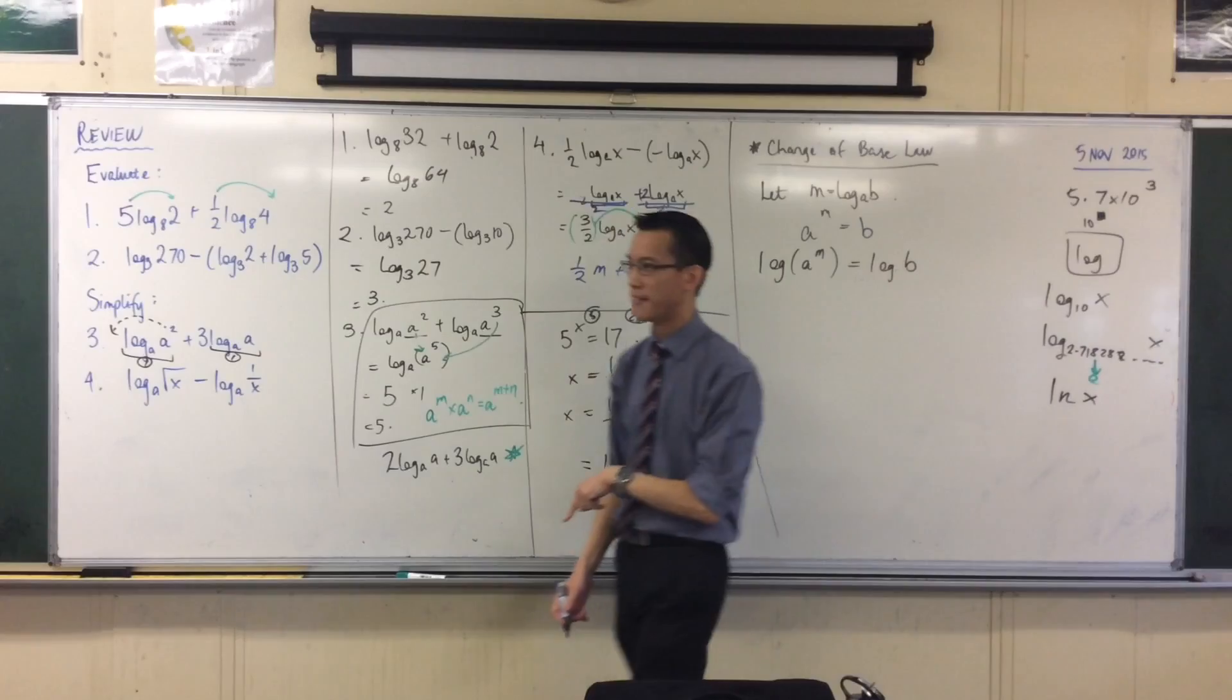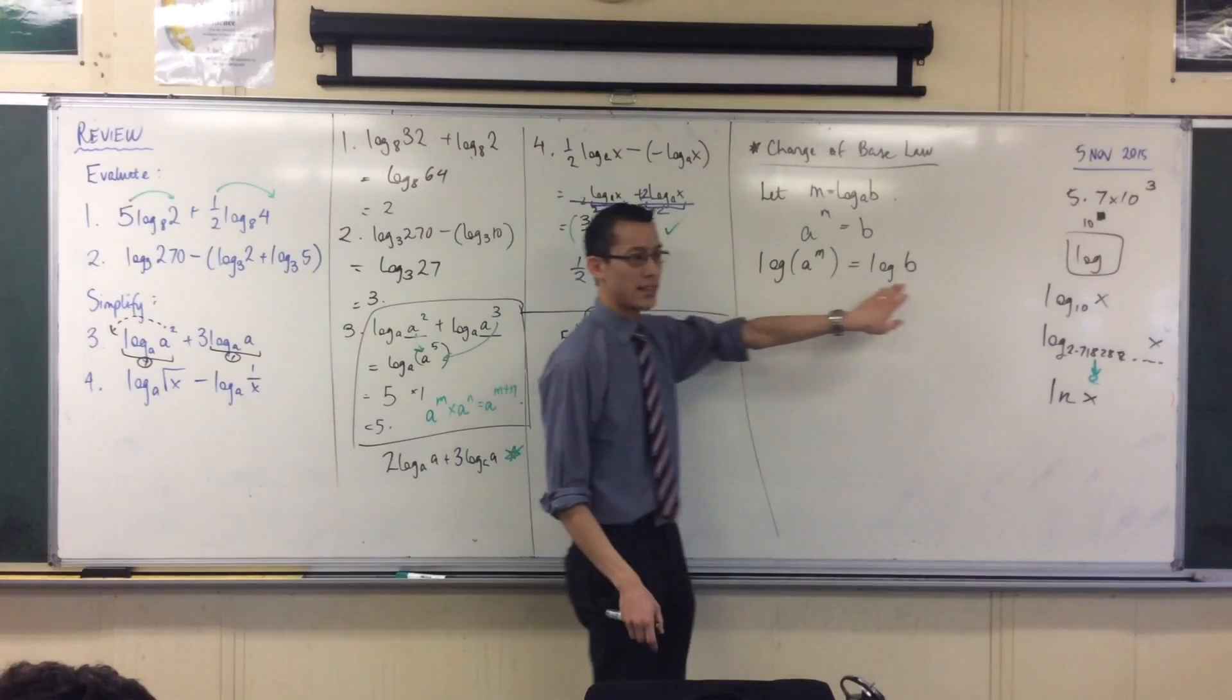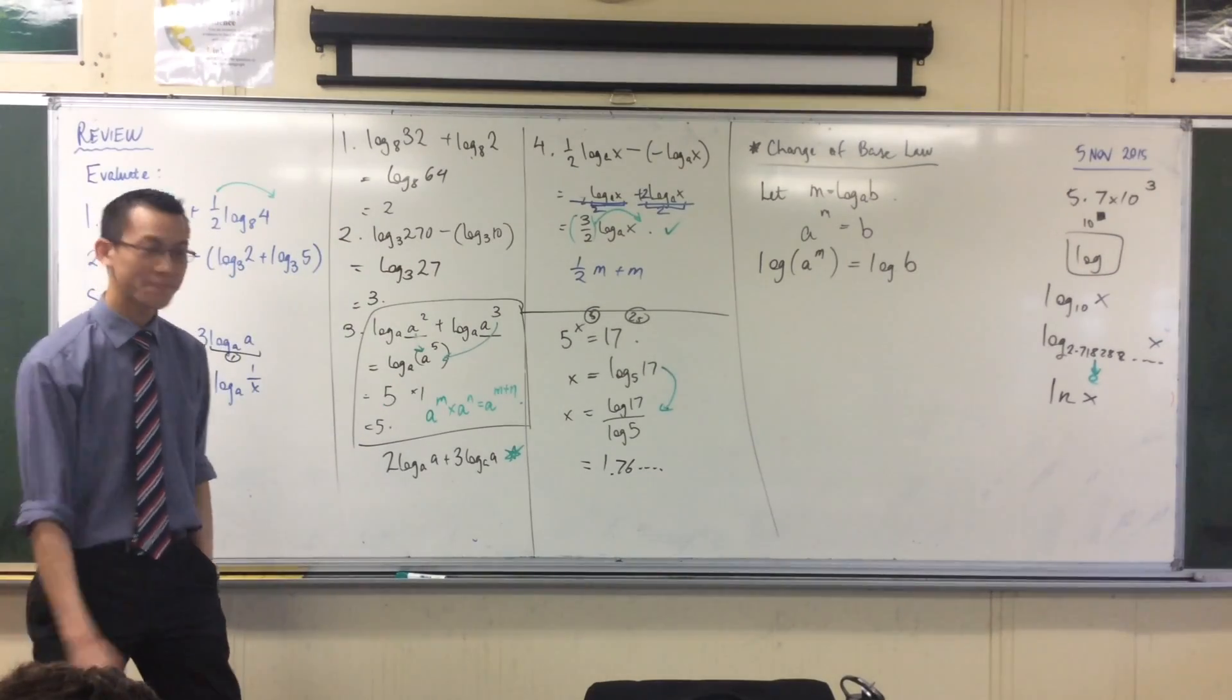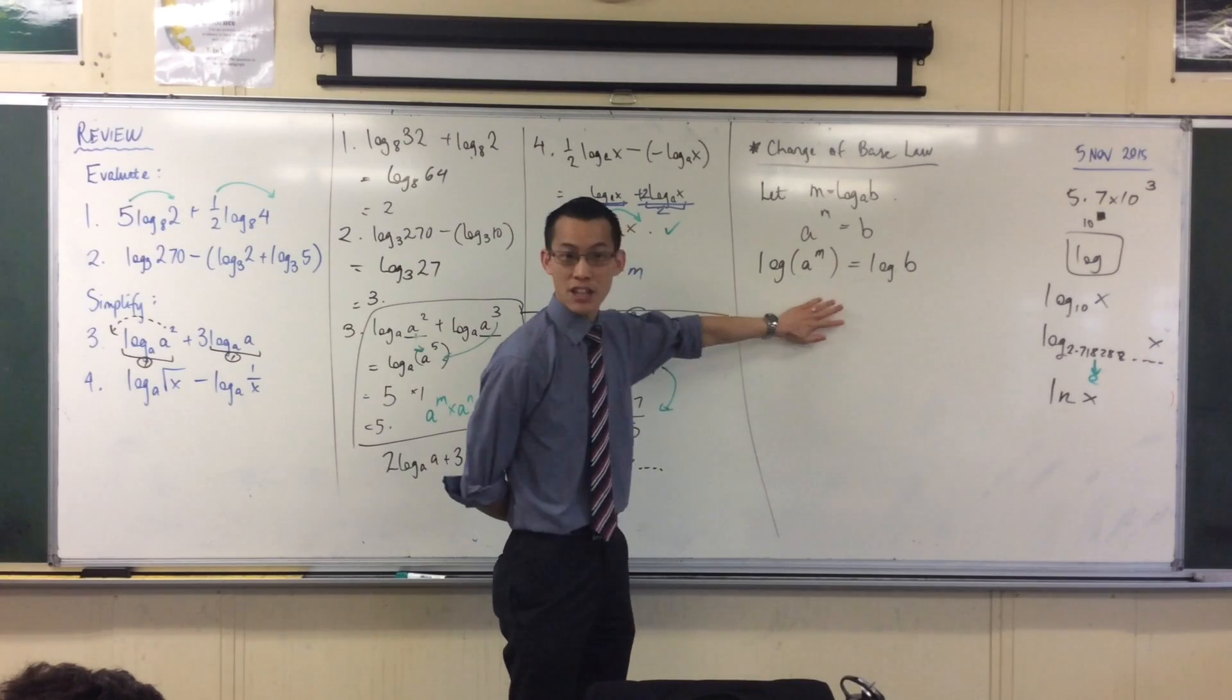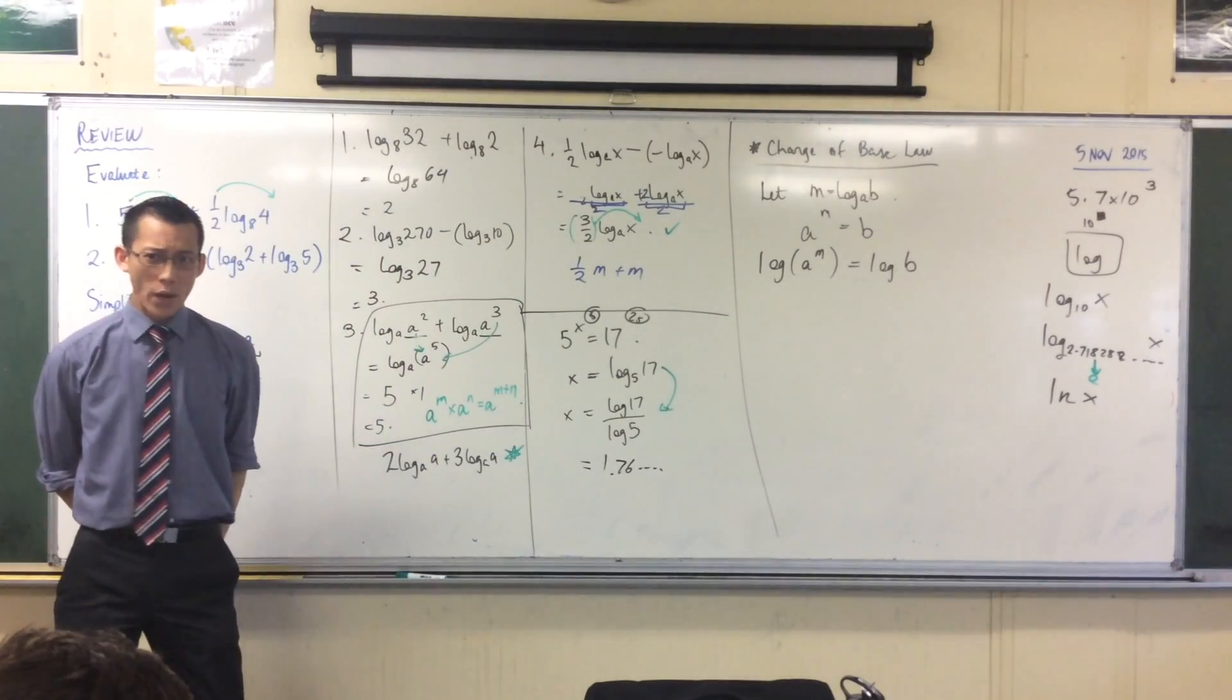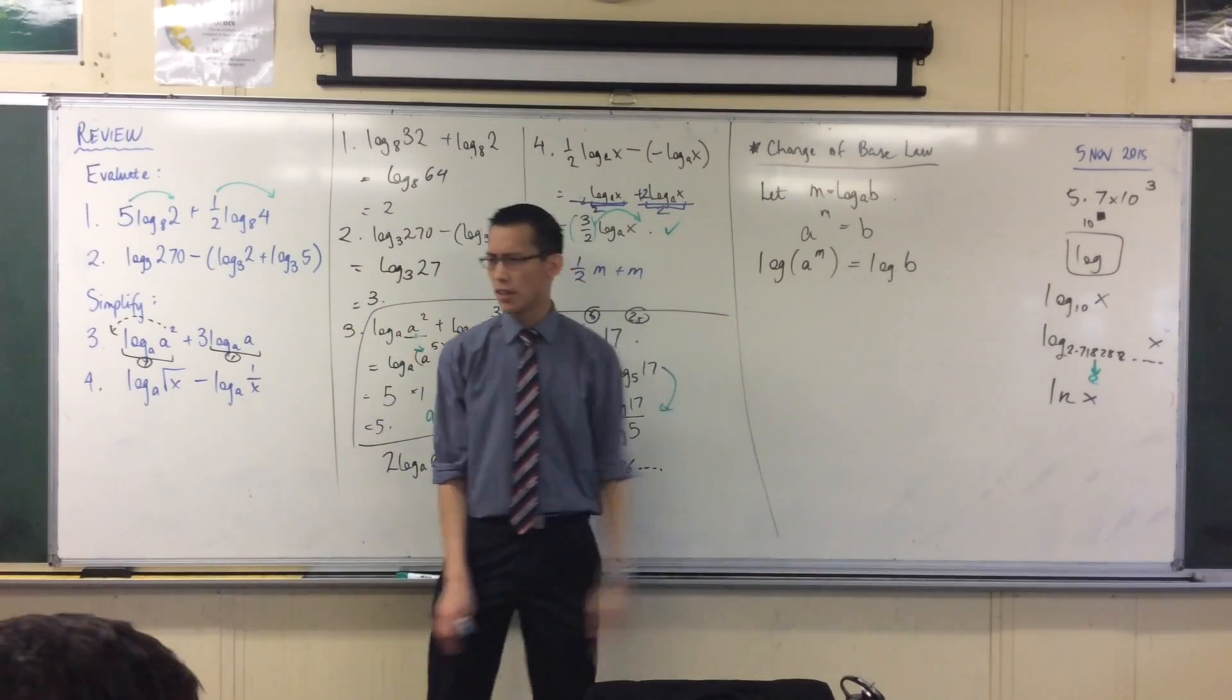And you will find the LN button right next to the log button. It's another kind of log. And you could use that for this as well. But that's something which you'll need more in detail next year. I just want you to know that it exists. Sir, can you change the base from 10 to 500? You can. Once I show you this, you can change the base to anything you like. So, let's finish it, shall we? I'm very close, by the way.